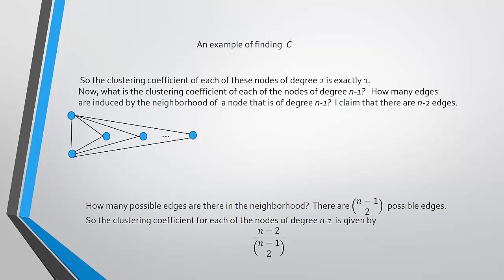What is the clustering coefficient of the nodes of degree n minus 1? Looking at the n minus 1 nodes in the neighborhood of one of these nodes, the n minus 2 nodes are not connected to each other. Therefore the only edges we pick up are from the node connected to each of them, so there should be n minus 2 edges in the neighborhood. The ratio is n minus 2 over n minus 1 choose 2.